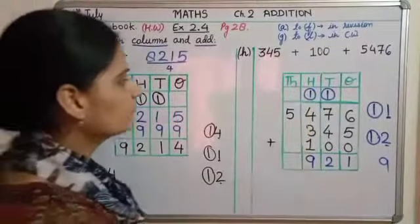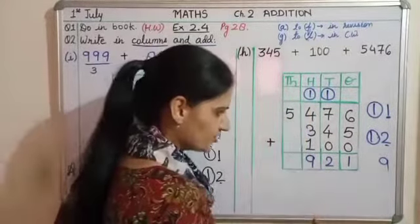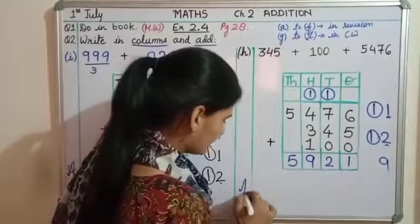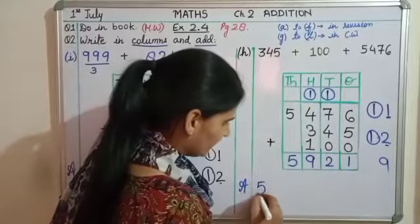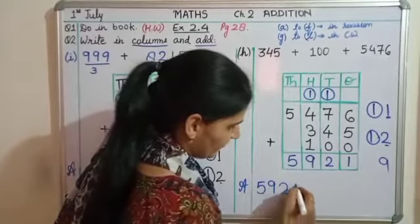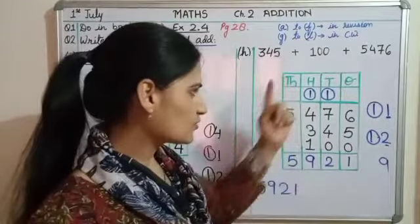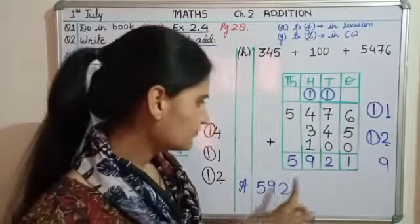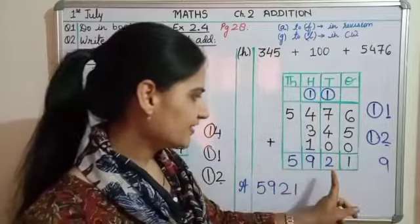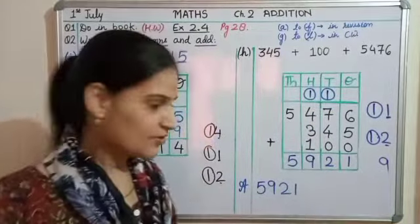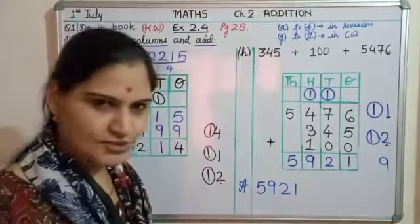Next, you have the thousands column. Five is written, no other digit. So five plus no number remains as five. So what is our answer? Five, nine, two, one - these are the digits. Now the number name is: five is in the thousands place, so it is five thousand, nine hundred, twenty-one. Because the last two digits we speak together. So it is five thousand, nine hundred, twenty-one.